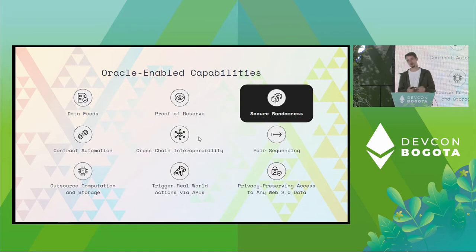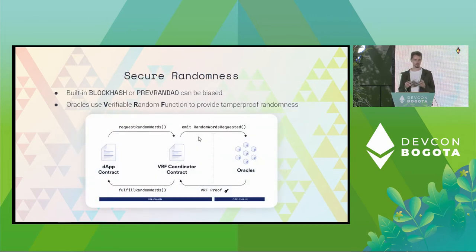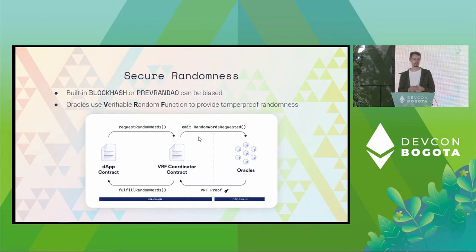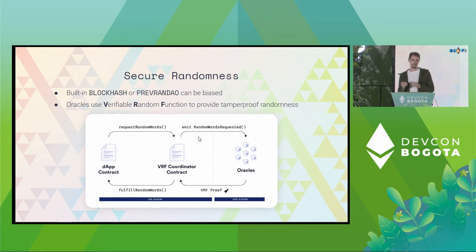Let me talk about secure randomness and what that enables contracts to do. There are two on-chain native ways on Ethereum to get random values. One is the block hash opcode — that's sort of audit findings 101: do not rely on the block hash opcode for randomness. Any block producer can easily tamper with that.